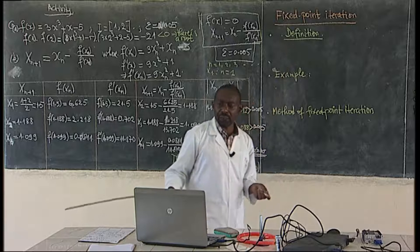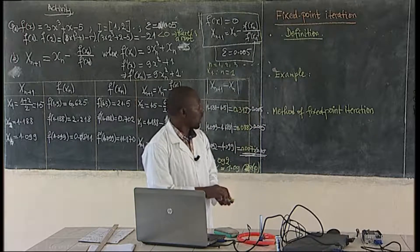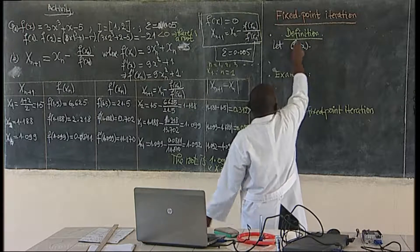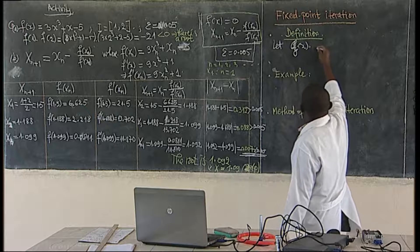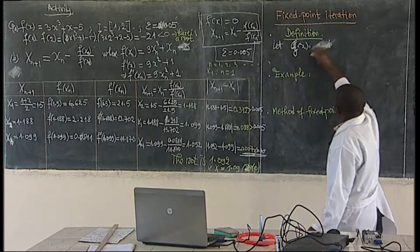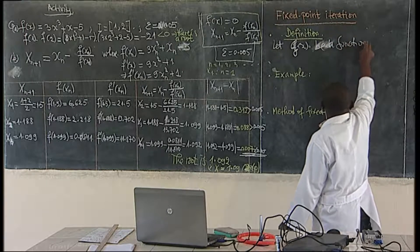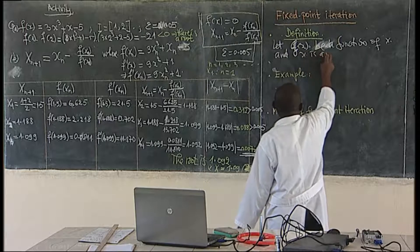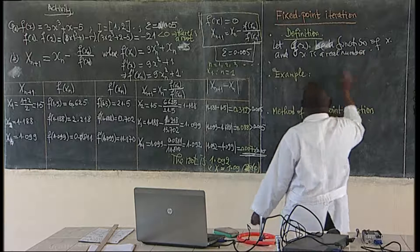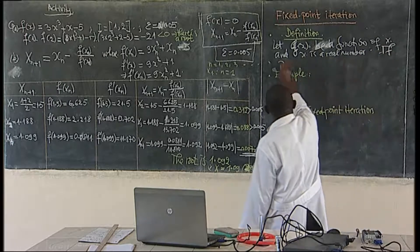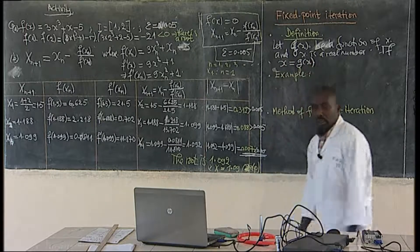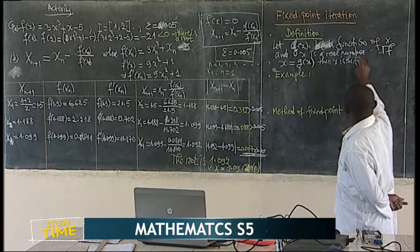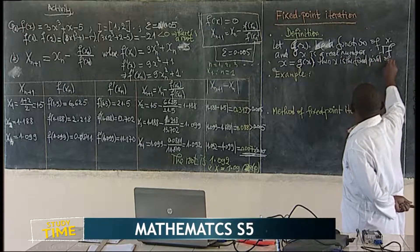So we need to know what is the fixed point of a given function. If we have a function g(x), and x is a real number, then if x = g(x), then x is the fixed point of g(x).